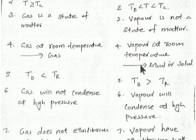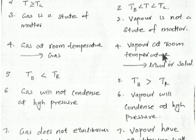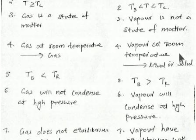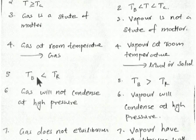Vapor at room temperature is a liquid or solid. For example, iodine at room temperature is solid — when you heat it, it converts into vapor. Water at room temperature is liquid — when you heat it, it converts into vapor. This happens because for gases, the boiling point is always less than room temperature.